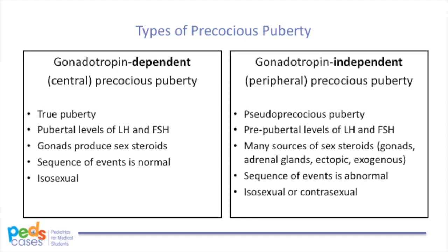In girls, we should only see signs of female puberty, like the start of breast development or menses. In boys, we should only see signs of male puberty, like an increase in testicular size. The sex steroids come from the gonads. The other type is gonadotropin-independent precocious puberty, also known as peripheral or pseudo-precocious puberty. It's not true puberty because it is independent of input from the hypothalamus and pituitary, and the sex steroids may not be coming from the gonads.